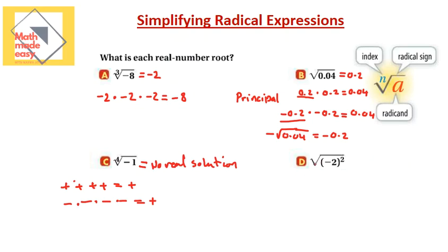The last question asks for the square root of negative two squared. Well, negative two squared is four — negative two times negative two equals four. So the square root of four is two. You write the positive solution only, not the negative, because they asked for each real root and this indicates the principal, positive root only.